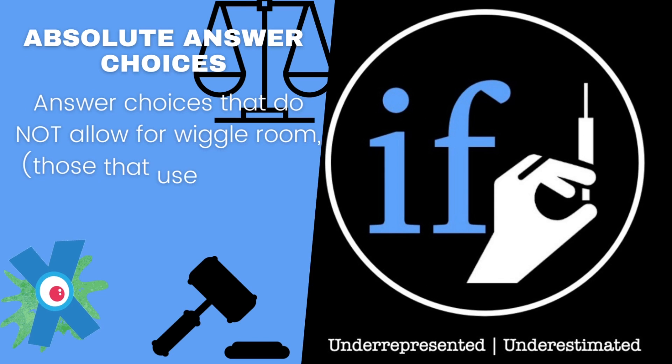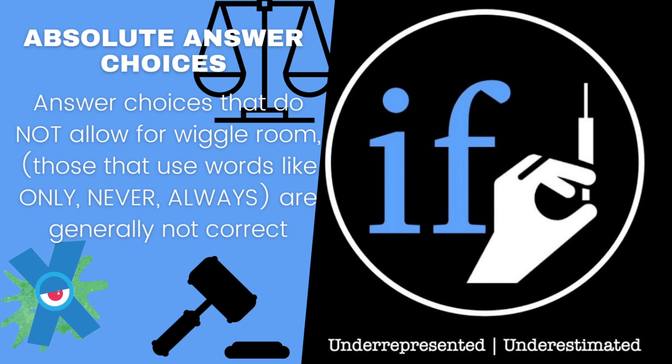The second trap the MCAT throws your way is absolute answer choices. Absolute answer choices are those that don't allow for wiggle room. They contain very strong words like 'never,' 'always,' or 'only' — that's a big one — and they completely rule out the possibility for any other alternative. These answer choices are generally not correct, although they can be, because they're saying that the alternative is literally impossible, and because we're trying to be doctors, we know that everything is within the realm of possibility for the most part.